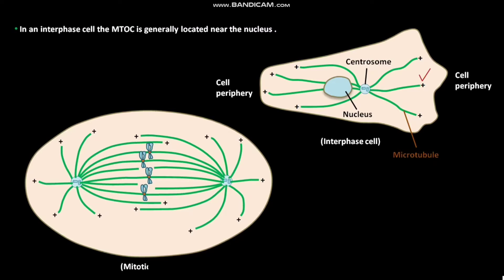In a mitotic cell, two MTOCs are called spindle poles. In a neuron, microtubules in both axons and dendrites are assembled from an MTOC in the cell body.